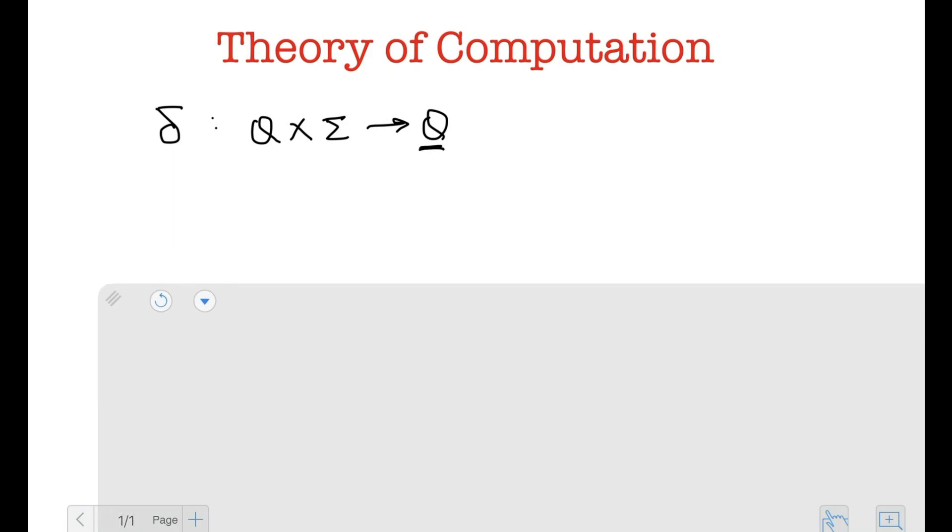But in case of an NFA, we said that delta will be from Q cross sigma union epsilon to the power set of Q, and the power set of Q is also going to contain the empty set as a subset.